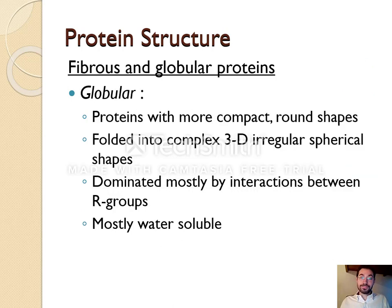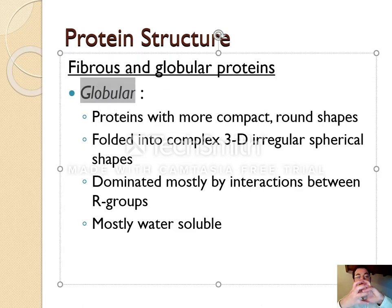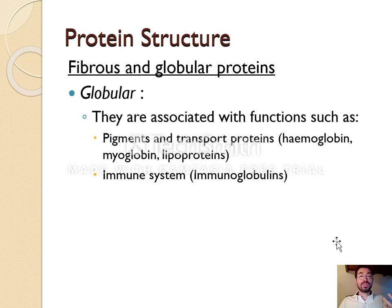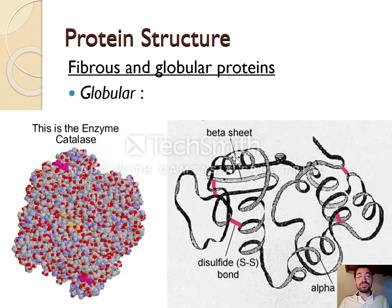As opposed to globular proteins. Globular proteins have a more compact, round shape — the word 'glob' really makes you think of a round shape. They're folded into a 3D conformation, and they tend to be dominated by interactions between the R groups. Since anything can be in an R group, basically any type of bond can happen: ionic, metallic, disulfide, hydrophobic and hydrophilic interactions — all of these can make a protein globular. Because they are globular, they tend to be water-soluble, meaning they can dissolve in water.